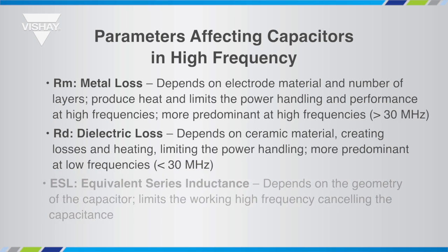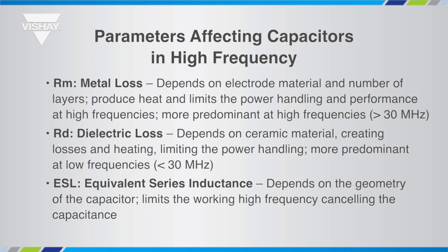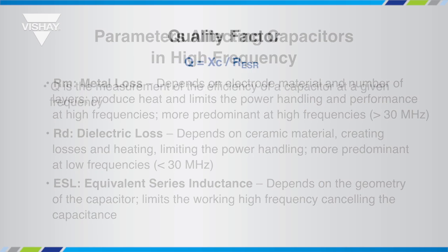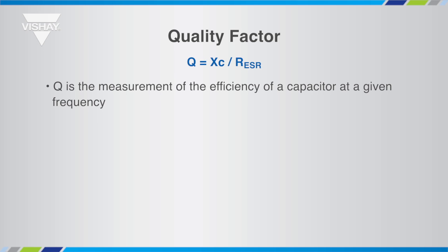The Equivalent Series Inductance is the parasitic inductance due to the conductors and is predominant at very high frequencies, creating a resonant circuit with the main capacitance. Beyond this resonant frequency, the capacitor behaves as an inductor.